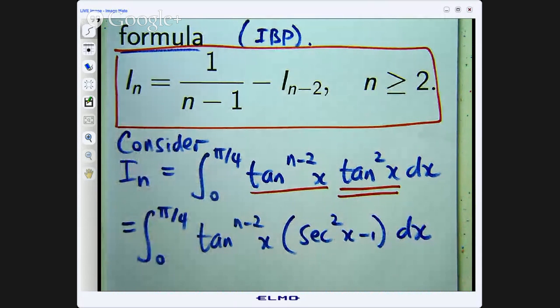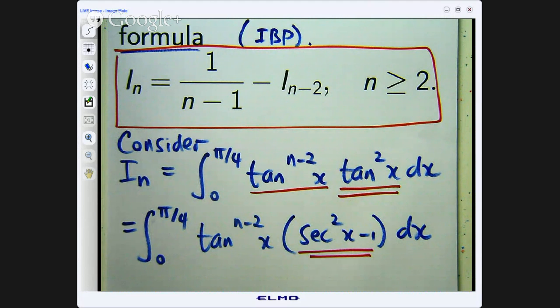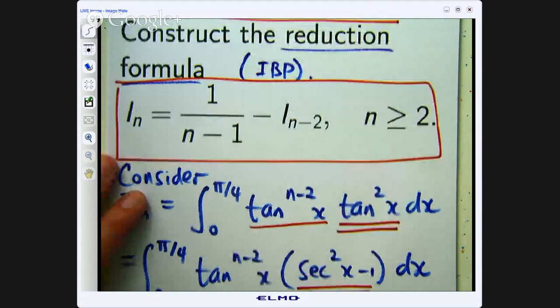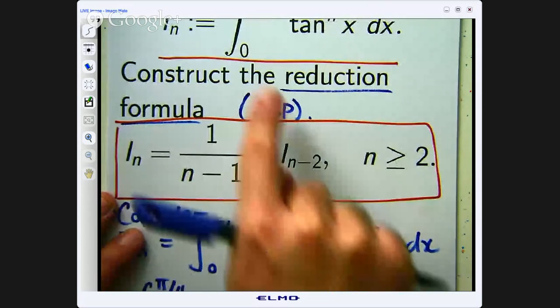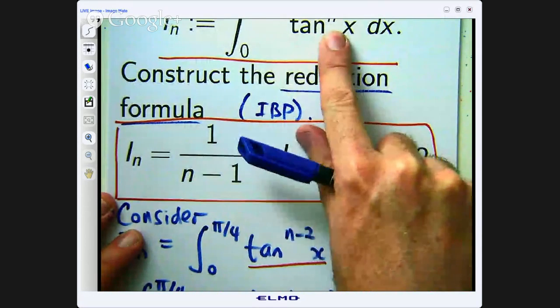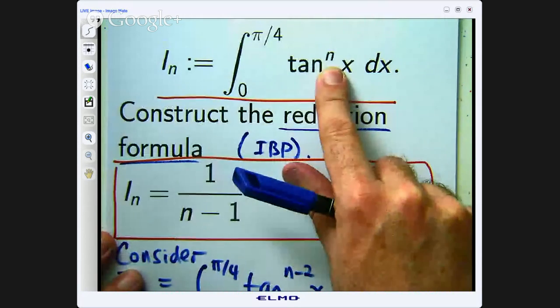So I have just used tan squared plus 1 equals sec squared. Now you can see where I am headed - I need to get an I sub n minus 2 here, something like this with n replaced by n minus 2.